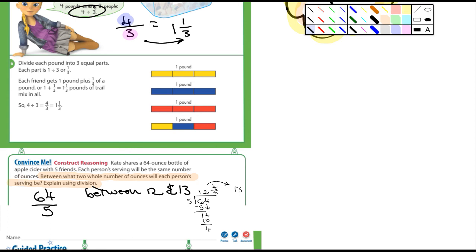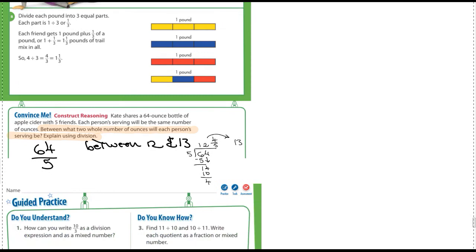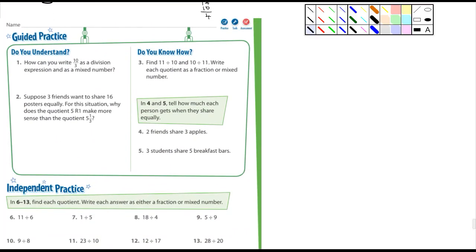Okay. Let's move down. Okay, how can you write 10 over 3 as a division expression and as a mixed number? So remember the expressions are something without an equal sign. 10 divided by 3. And then as a mixed number. You know what? I actually did 10 over 3 just a few minutes ago, didn't I? 3 goes into 10 three times with 1 left over and the denominator stays the same. There we go. Number 1 is done for you.